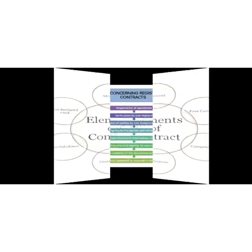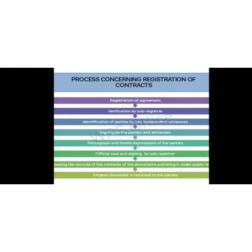We will now discuss the process concerning registration of contracts. After the registration of an agreement, the sub-registrar verifies the document to determine its lawfulness and checks to confirm the payment of the total stamp duty. In its presence, the parties that have executed the document are summoned to admit that they have registered the aforesaid document. Such parties are then personally identified by two independent witnesses.